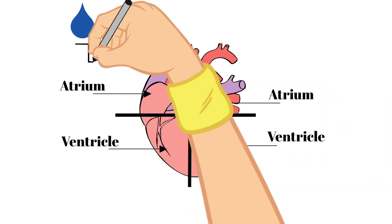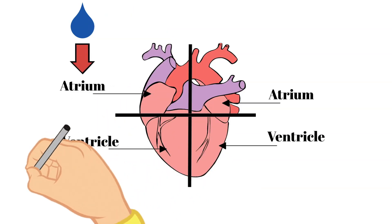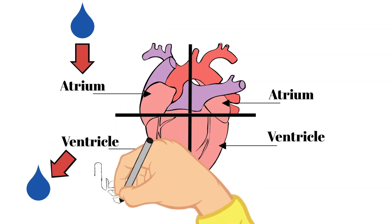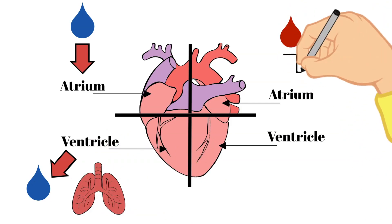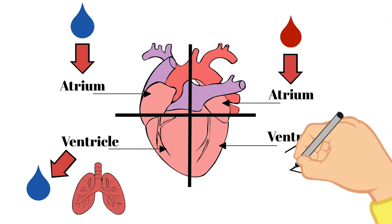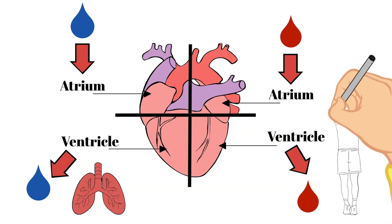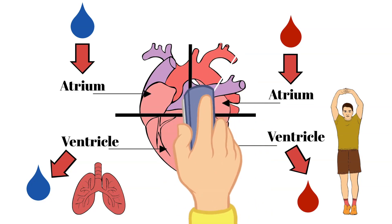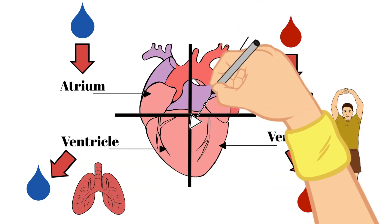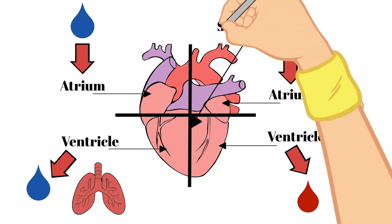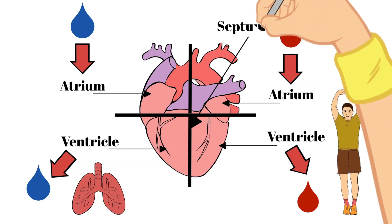The right side of your heart receives blood from the body and then pumps it to the lungs. The left side of your heart receives blood from the lungs and pumps it out to the body. Running down the middle of the heart is a thick wall of muscle called the septum, whose job is to separate the left side and the right side of the heart.